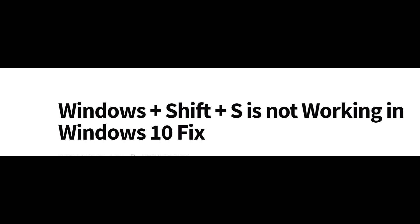But some users have been facing an issue where the Window Shift S key is not working for them in their Windows 10 PC. This error arises due to a conflict between the snipping tool and OneNote keyboard shortcut. We have a solution for both Snip & Sketch and OneNote. Let's see how.